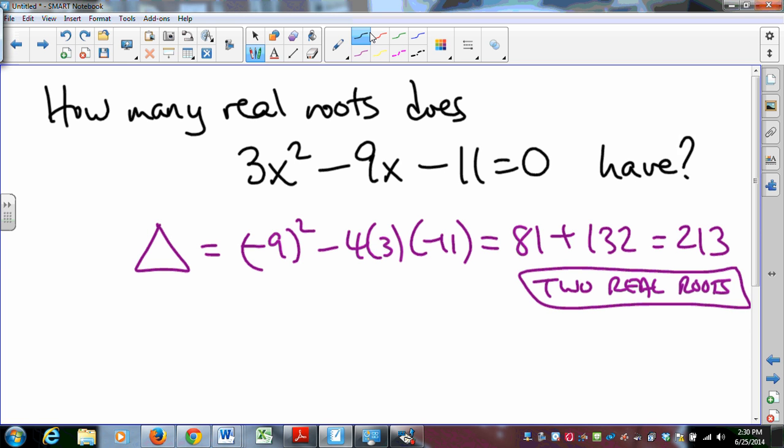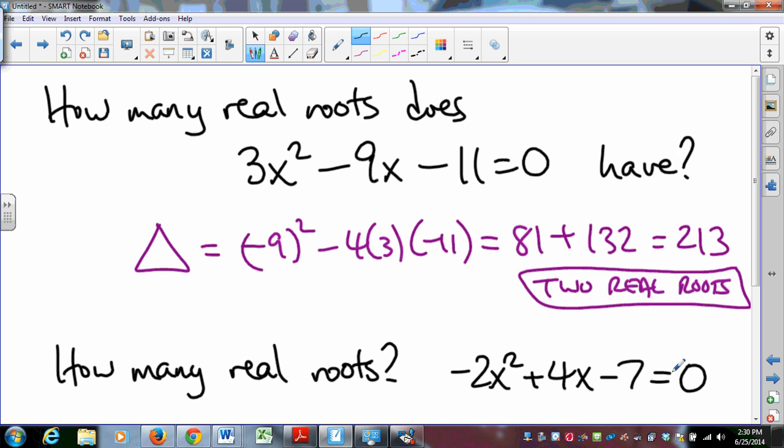You should come to class ready to talk about how many real roots the equation -2x² + 4x - 7 = 0 has. You should be able to find the discriminant and come up with the number of real roots. These are questions we will ask you to do when you show up tomorrow. Okay. Thanks very much, everybody.